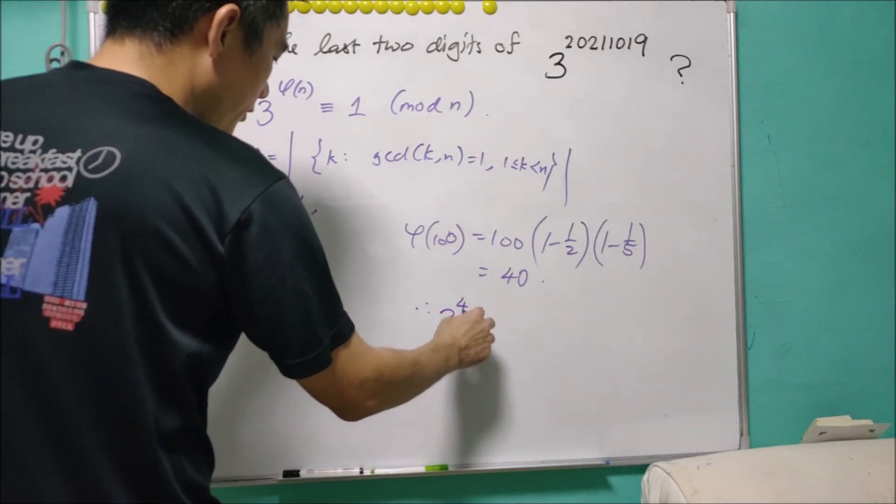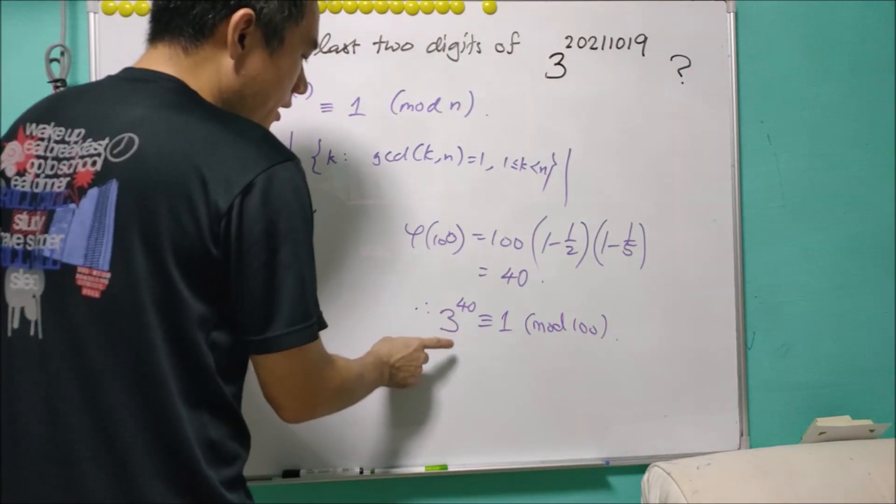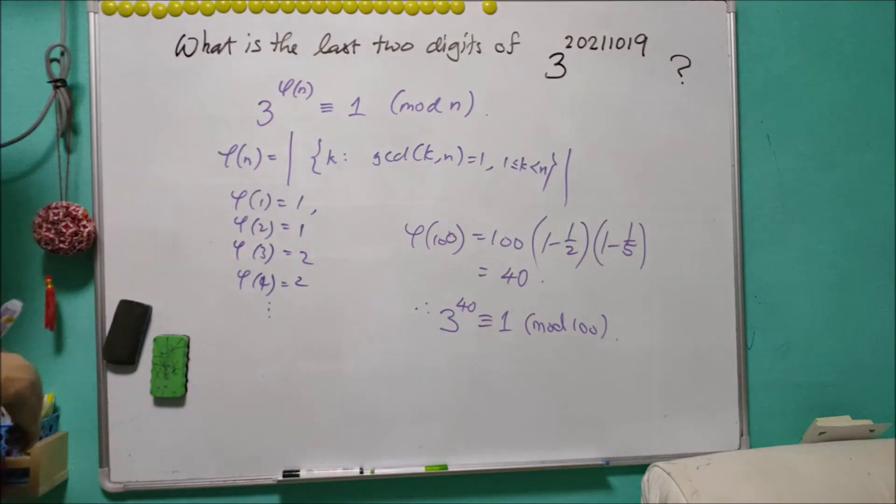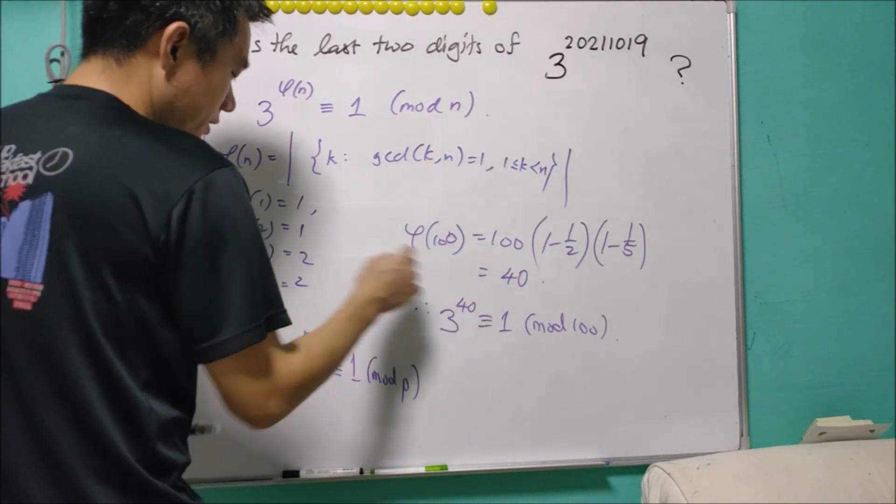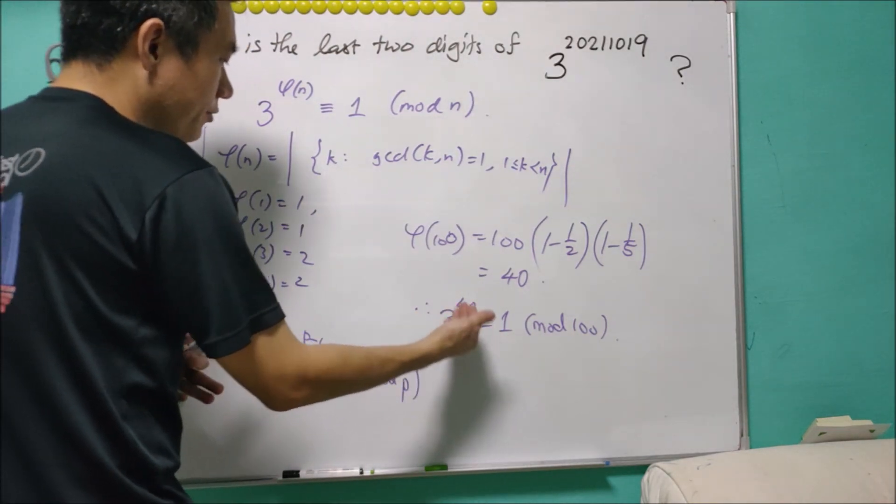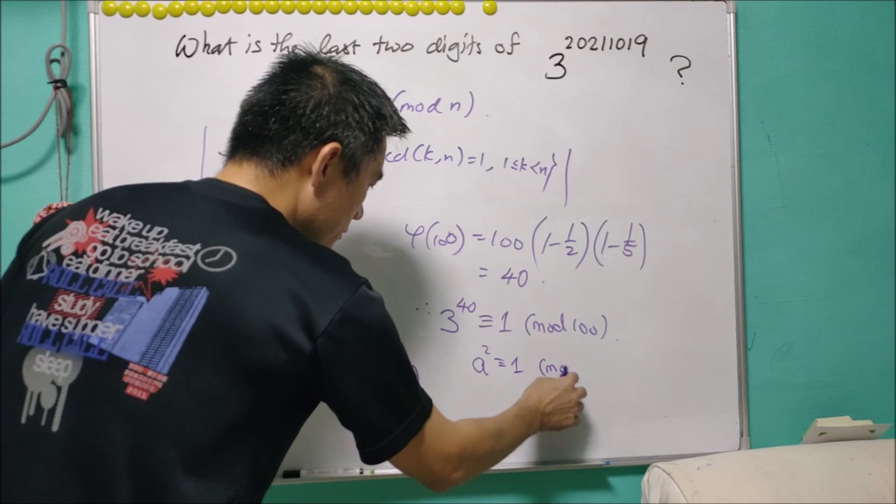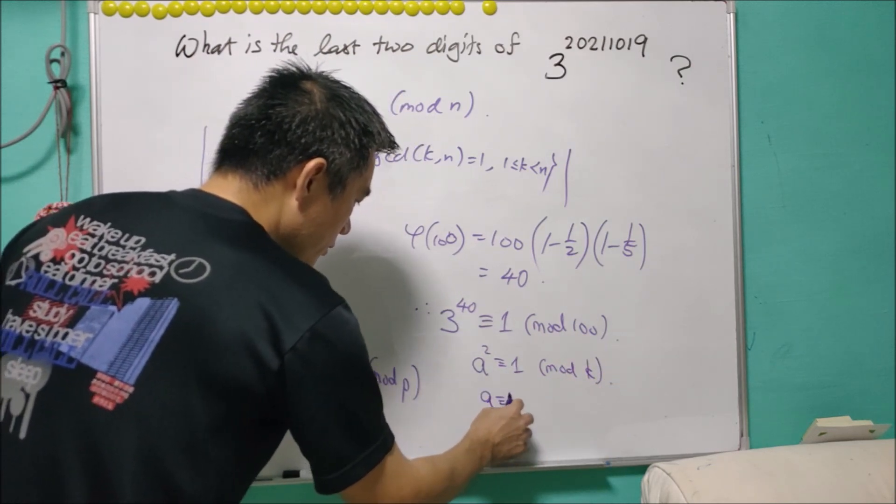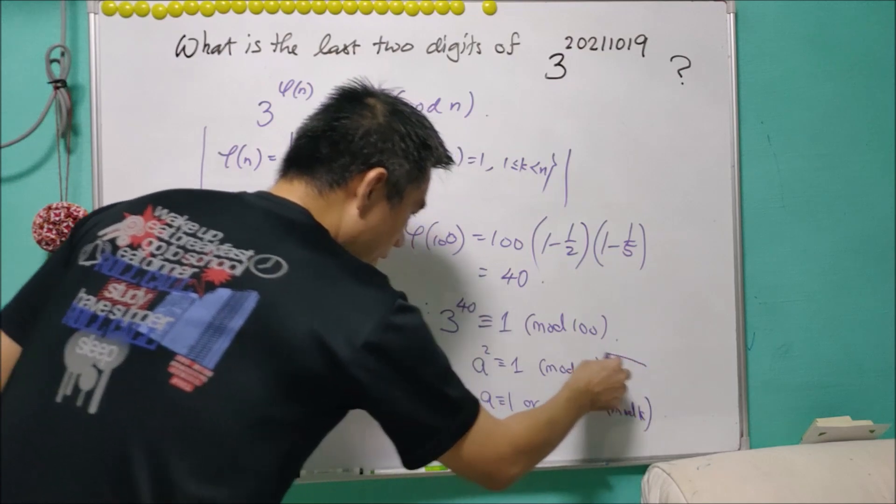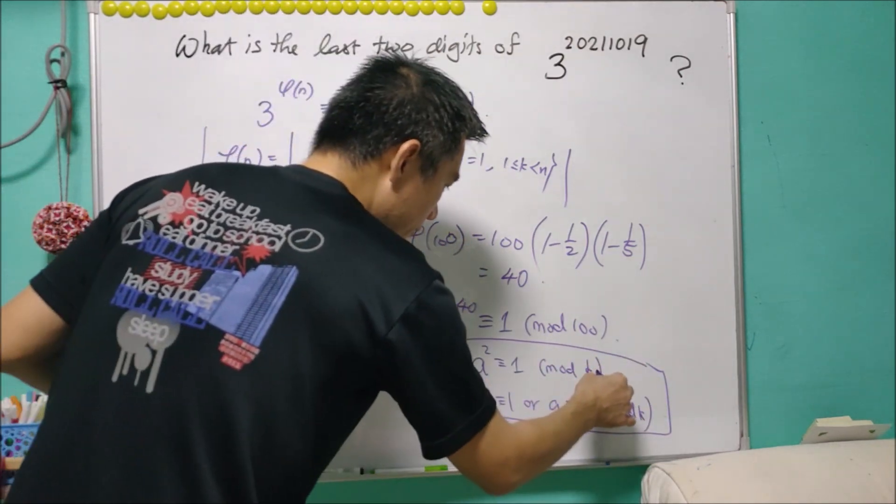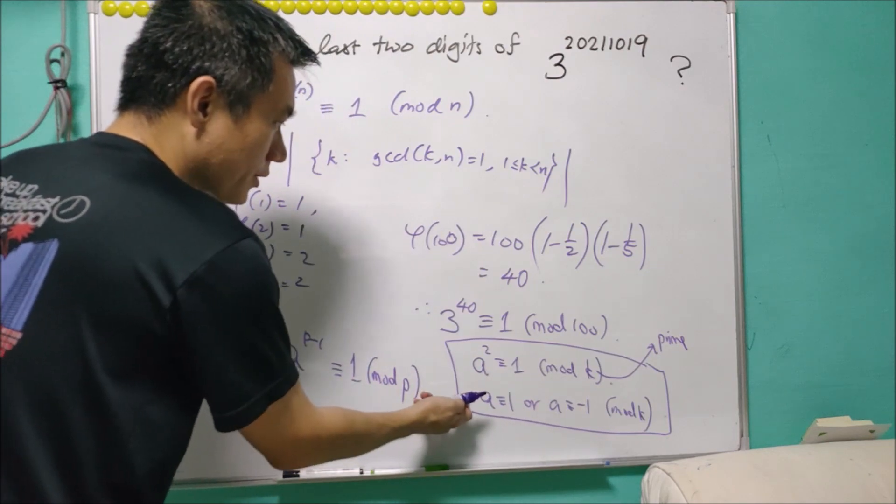This means that 3 to the power of 40 is congruent to 1 mod 100. This means that the last two digits of 3 to the power of 40 is equal to 01. While the last two digits of 3 to the power of 40 is 01, it doesn't mean that this 40 is the smallest positive integer. So we may want to find out what is, let's say, 3 to the power of 20. A common mistake is that people think if a^2 congruent to 1 mod k, then a is congruent to 1, or a is congruent to negative 1 mod k. Now in general, this is not true. This is only true if k is a prime number.